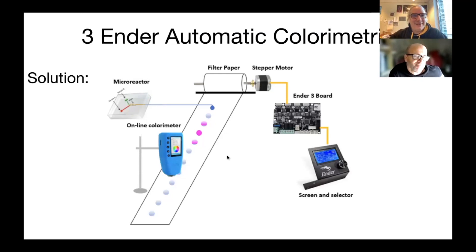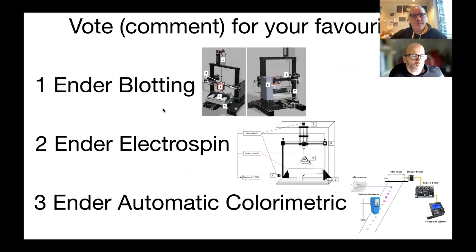All right. So how is going to be. Now we are putting this video on YouTube. You can vote by comment, which one is your favorite. If it's the Ender Blotting, the Electrospin, or the Automatic Colorimetric Detection. We will leave one week. So on the 5th of January at midnight, GMT plus one time, we will close it. And the one that got most votes will win an Ender 3.